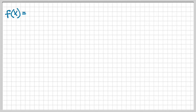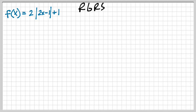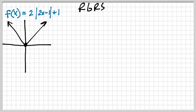Let's do another example: f(x) = 2|2x - 1| + 1. Using the acronym RGRS — rigorous — I realize it's an absolute value function. Normally it starts at (0, 0) and looks like a V. I notice there's no reflection because there's no negative.